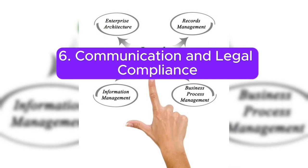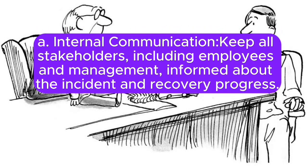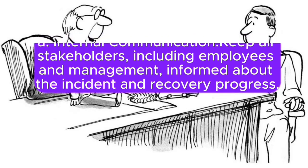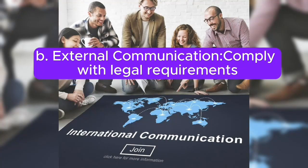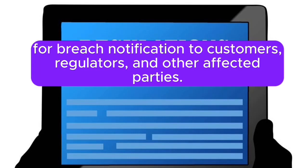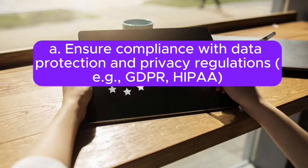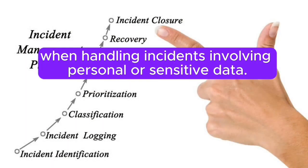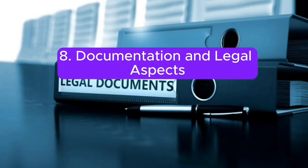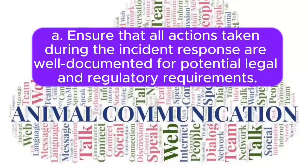6. Communication and legal compliance. A. Internal communication: Keep all stakeholders, including employees and management, informed about the incident and recovery progress. B. External communication: Comply with legal requirements for breach notification to customers, regulators, and other affected parties. 7. Regulatory compliance: Ensure compliance with data protection and privacy regulations — for example, GDPR and HIPAA — when handling incidents involving personal or sensitive data. 8. Documentation and legal aspects: Ensure that all actions taken during the incident response are well documented for potential legal and regulatory requirements.